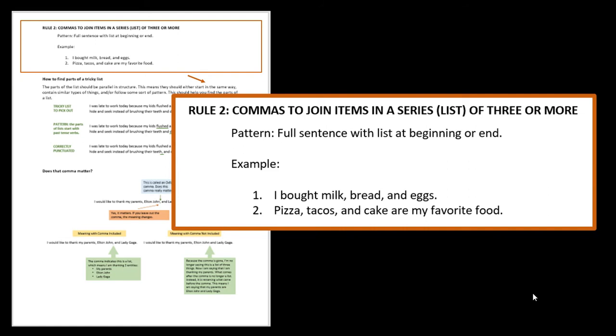The second one, pizzas, tacos and cake are my favorite food. Pizzas, tacos, cake, three items. We're putting commas in between. The list can happen anywhere in a sentence, but most commonly they're at the beginning or the end. So you just have to watch. Do I have a list? Do I have at least three things in my list? I do. I need to use commas between all the parts.